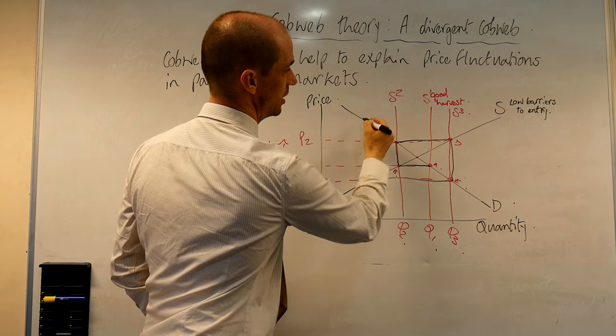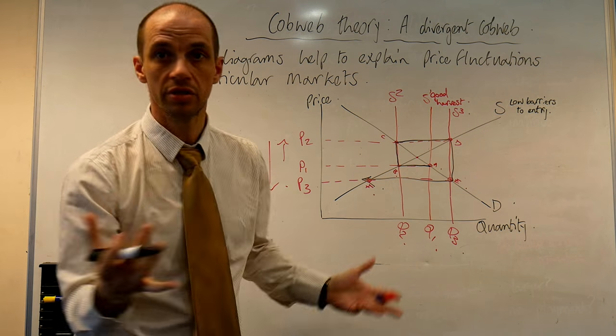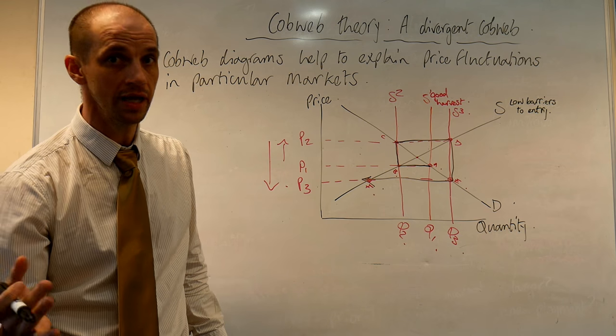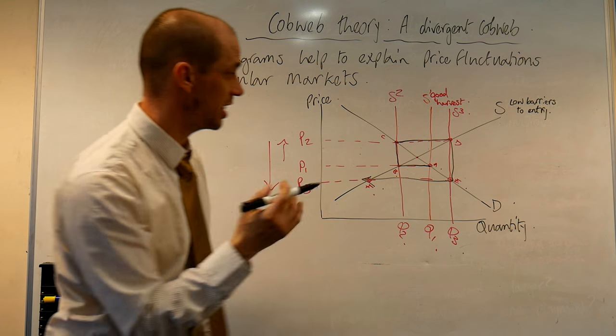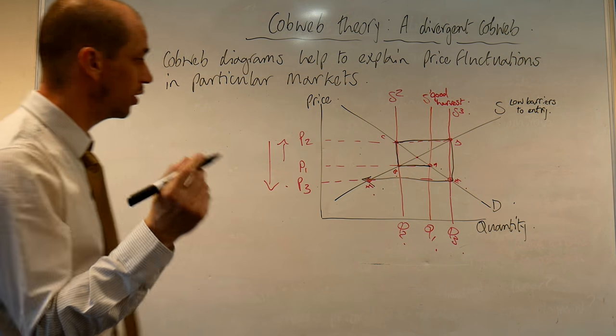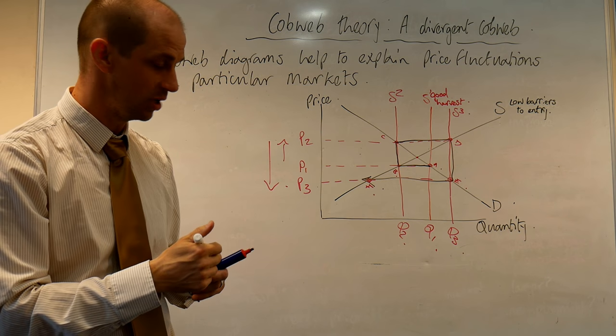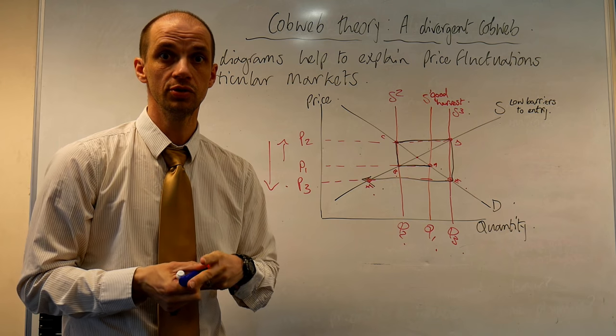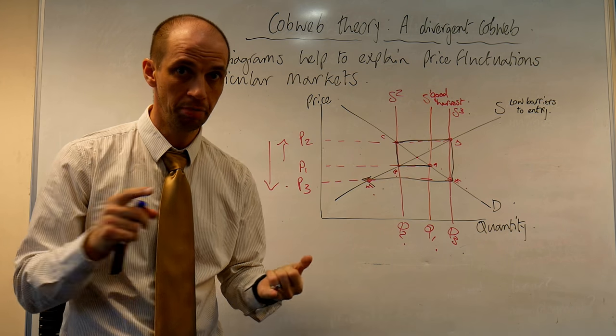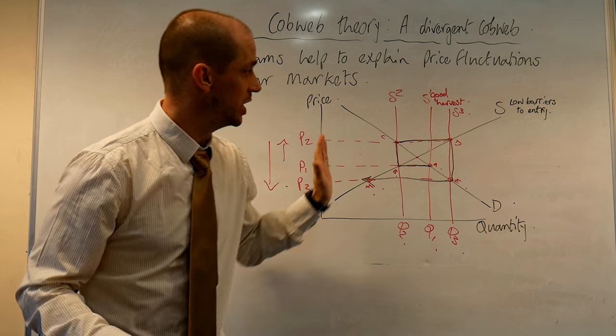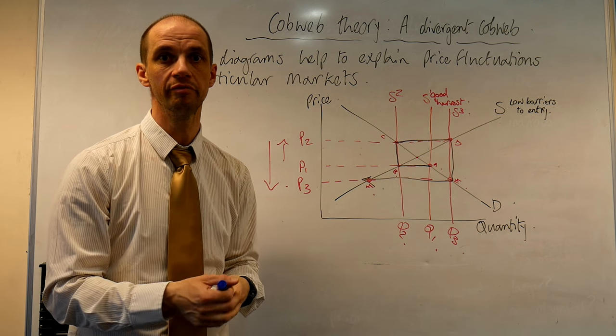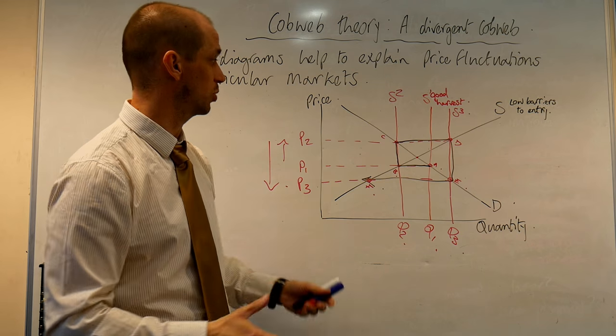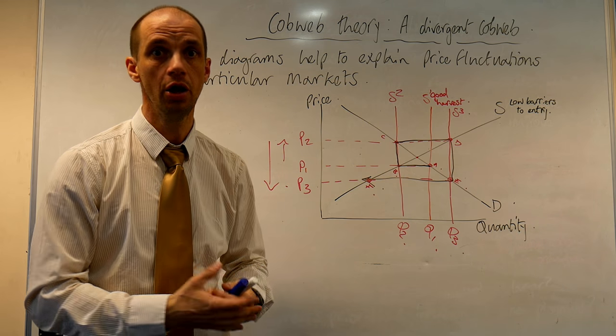It would then keep doing so. Thus we see a cobwebbing effect taking place. Now there are a couple of ways that we could deal with such a scenario. We could use a buffer stock scheme where any surplus production is actually bought up by the government at the given price and then is stored away and released when supply levels are actually quite low.